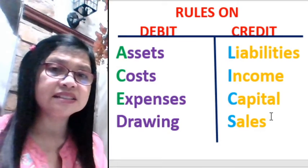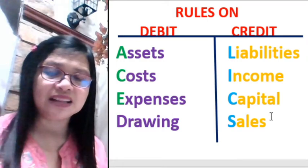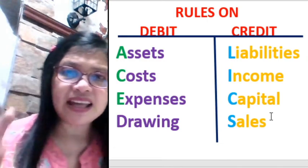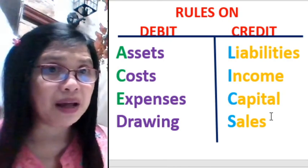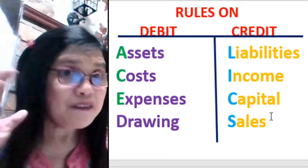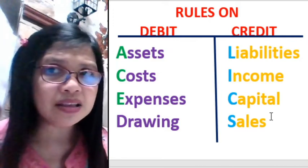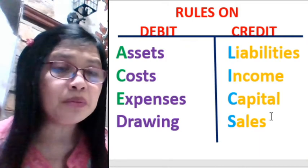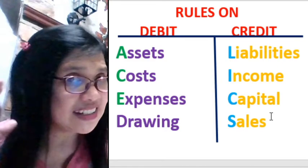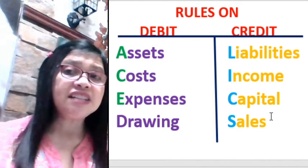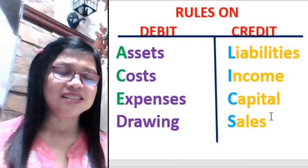Liabilities, income, capital, and sales have normal credit balances. Why is this? Due to the movements of all these accounts, the assets may increase or decrease. The basic rule on debit and credit is: to increase accounts that are on the debit side — assets, costs, expenses — you debit them. To increase liabilities, income, capital, and sales, you credit them.